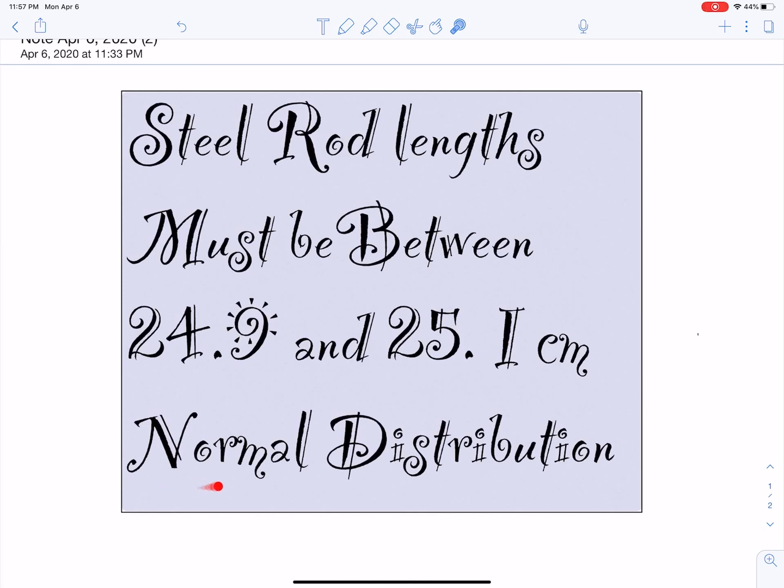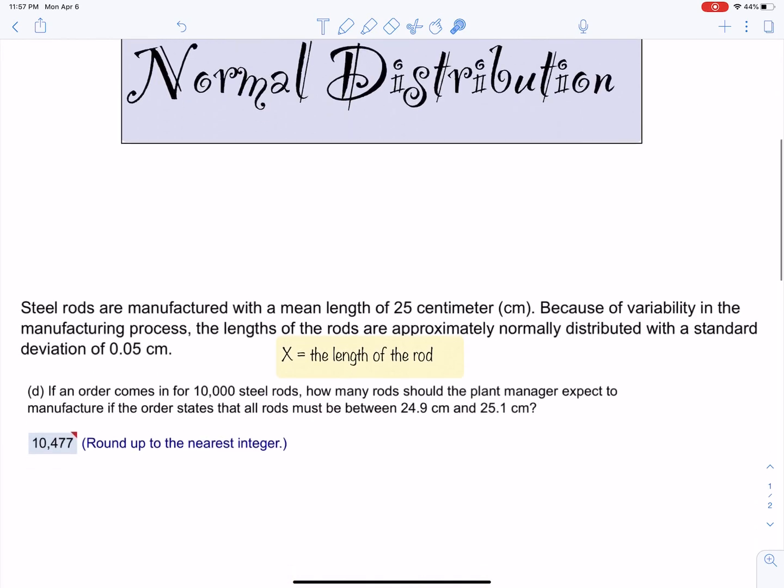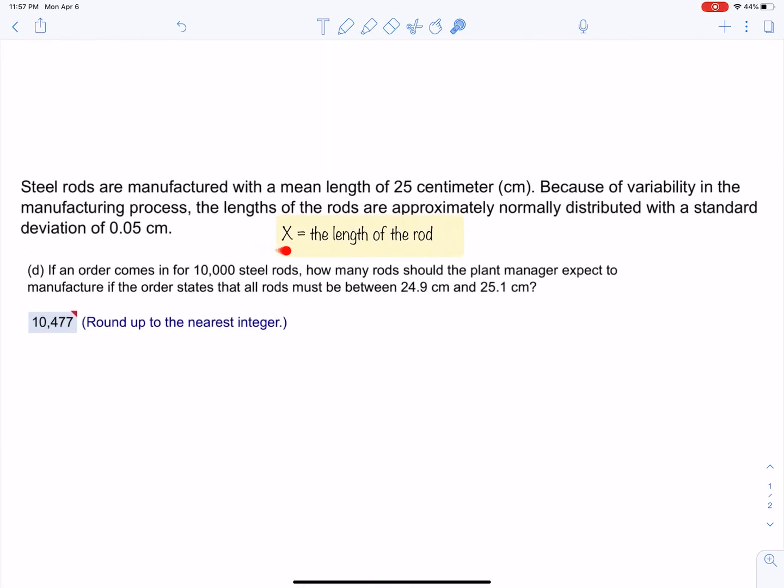This is a normal distribution. Why is it a normal distribution? Because think about the random variable here - it's the length of the rod. So length is a continuous random variable. It says steel rods are manufactured with a mean length of 25 centimeters. Because of variability in the manufacturing process...